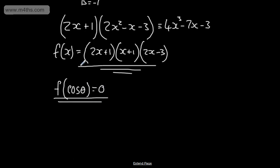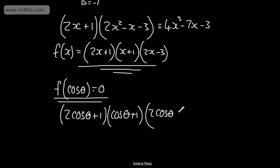So I'm going to sub this in. In this particular case, x is cos theta, we want this to be 0. So we'll have 2 cos theta plus 1 multiplied by cos theta plus 1 multiplied by 2 cos theta minus 3 must equal 0. These linear factors all multiplied by 0, so we can say from this that cos theta, just considering the first one, cos theta would equal minus 1 half.